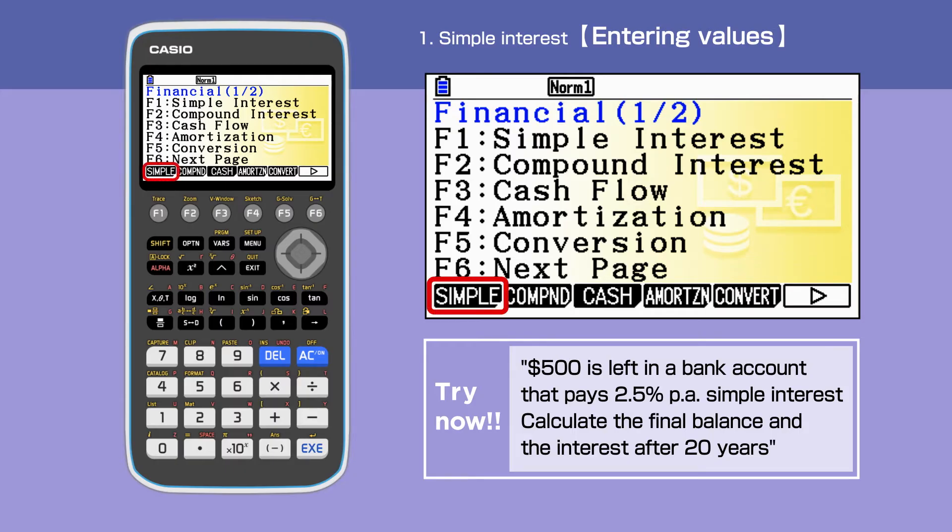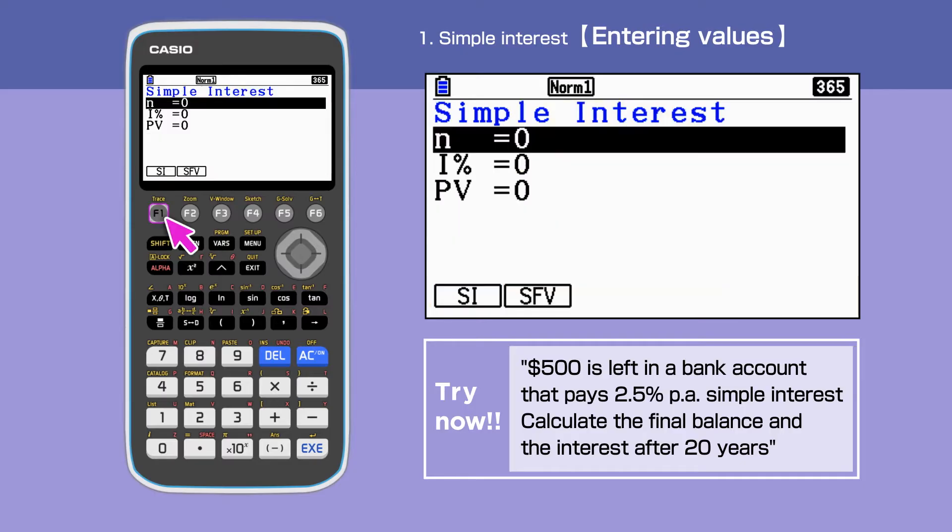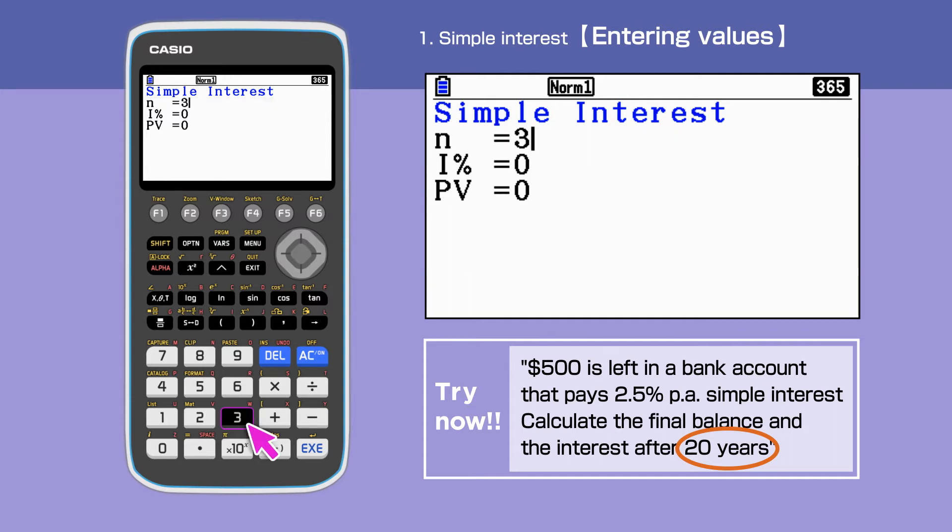Press F1 and select simple interest. The unit for N is day for simple interest. We enter N equals 365 times 20.